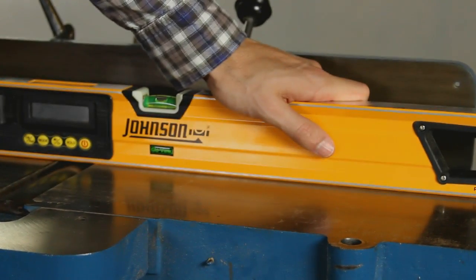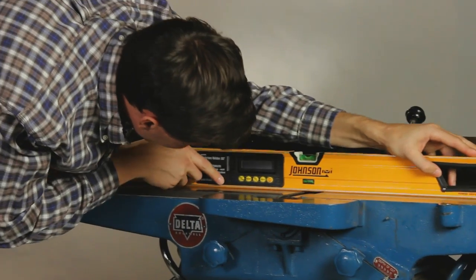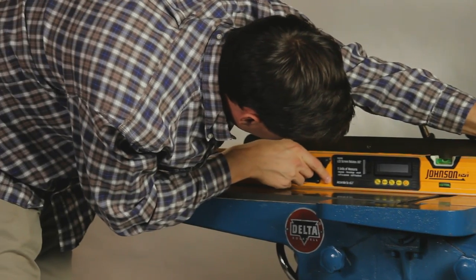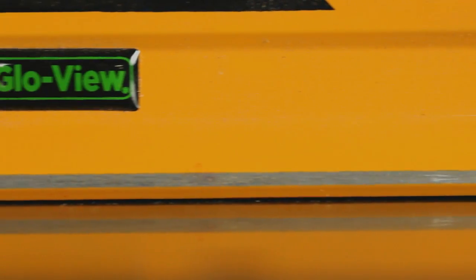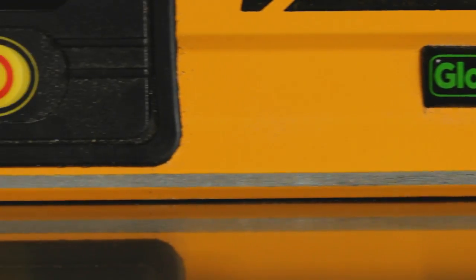Use your straight edge to check either side of the outfeed table, holding it down tightly against the infeed table. You're looking for gaps between the straight edge and the outfeed table that indicate the tables aren't aligned perfectly.